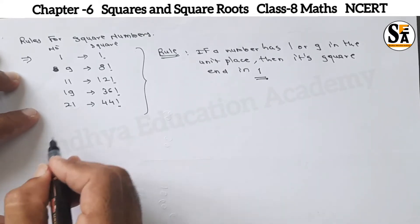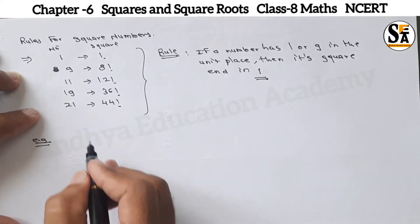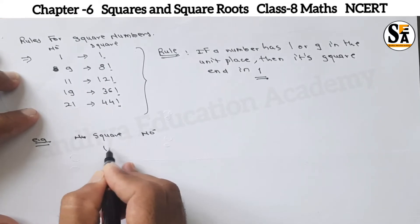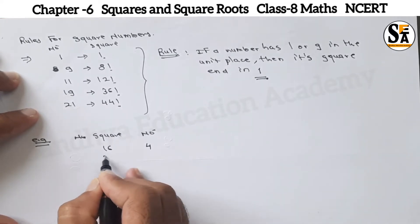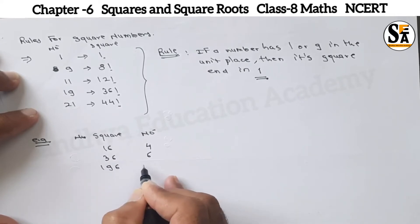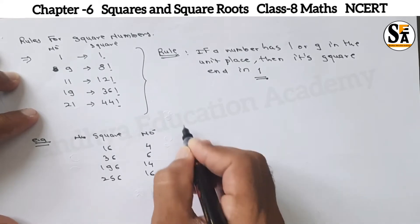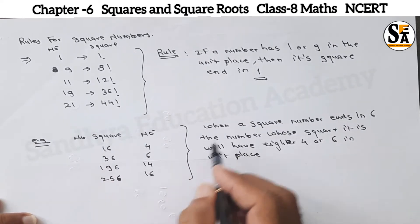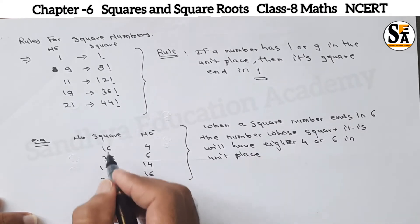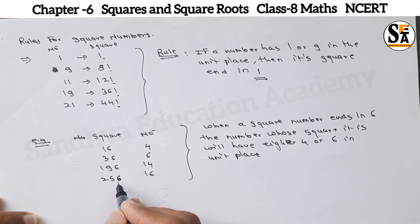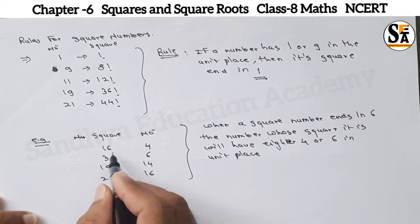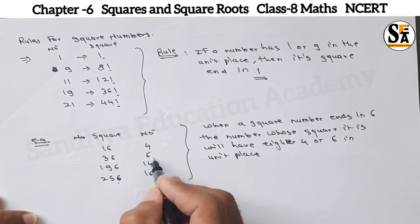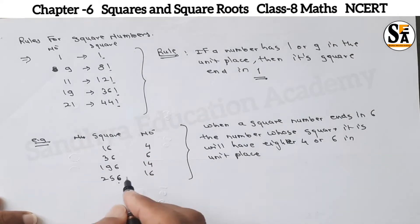Another rule: square numbers ending in 6. If square is 16, number is 4. If square is 36, number is 6. If square is 196, number is 14. If square is 256, number is 16. When a square number ends in 6, the number whose square it is will have either 4 or 6 in the unit place.